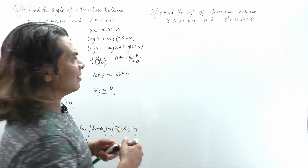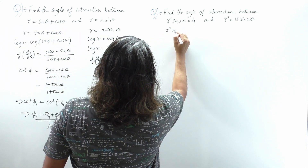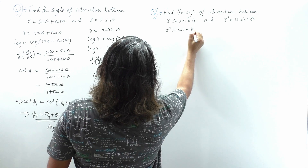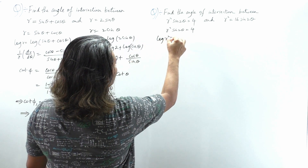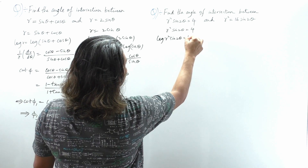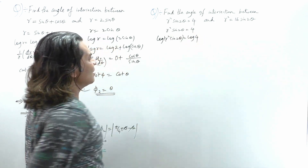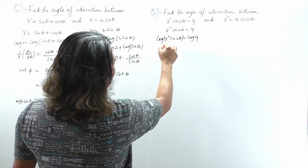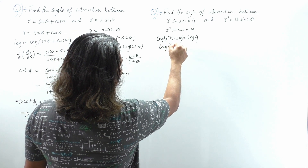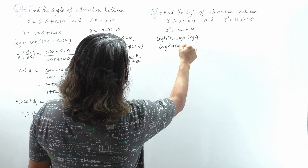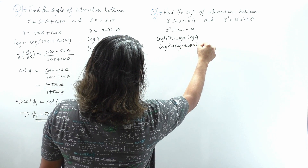First, we take the curve r²sin2θ = 4 and apply log on both sides: log(r²sin2θ) = log 4. Using log principles, log(a·b) = log a + log b: log r² + log(sin2θ) = log 4.